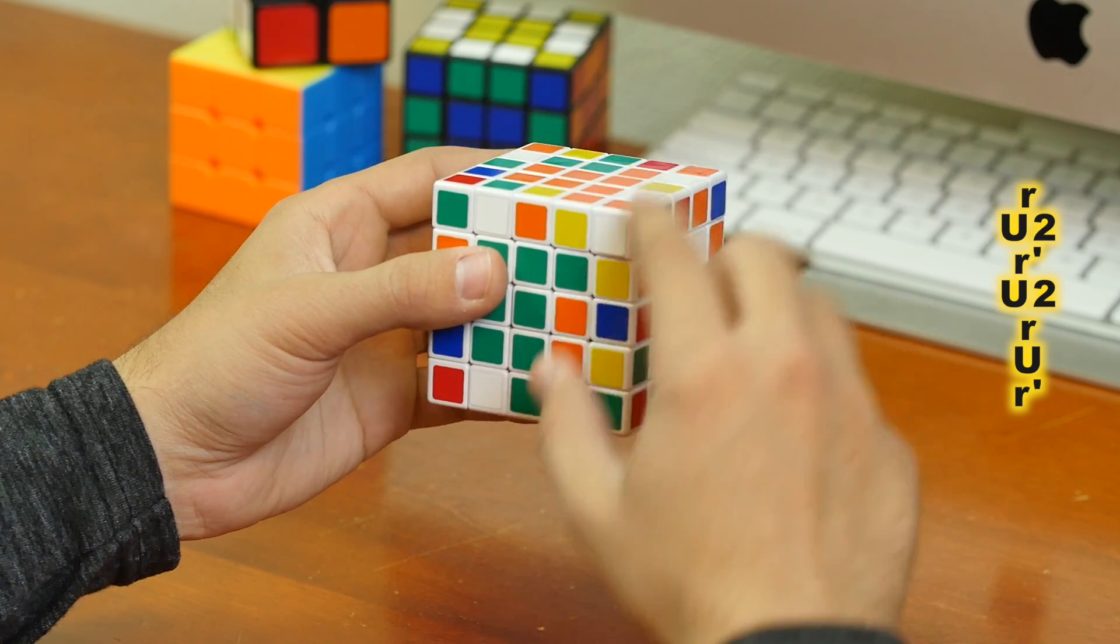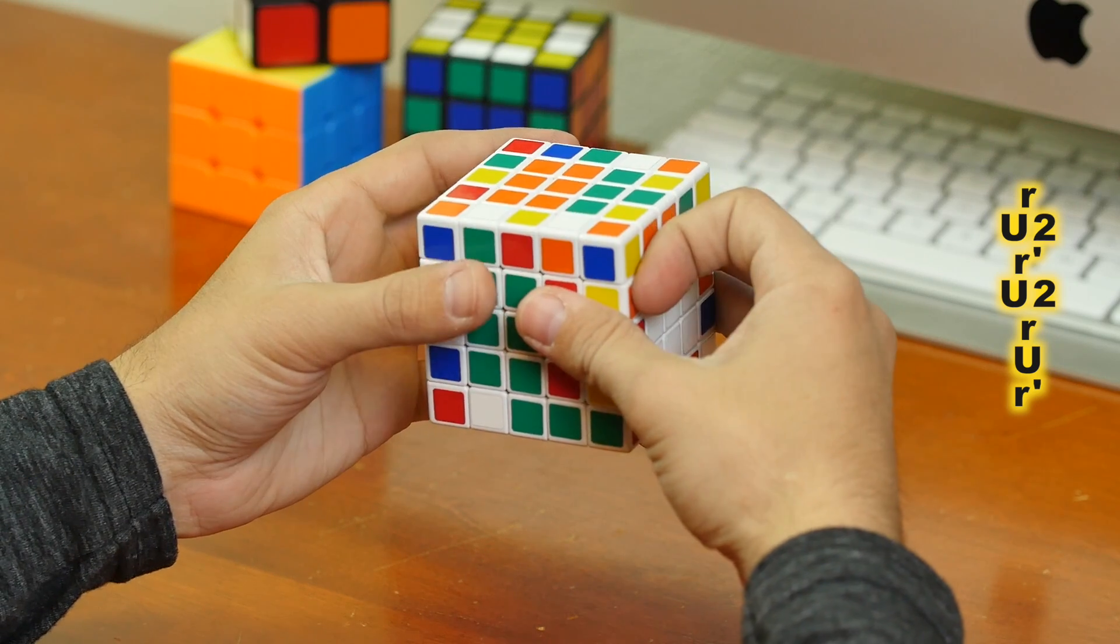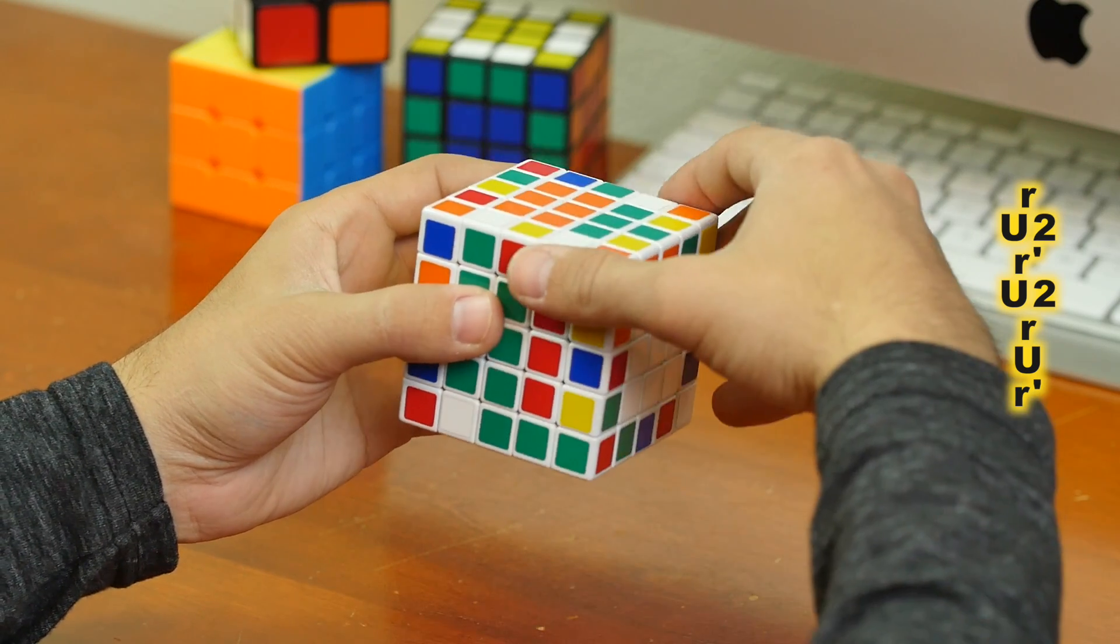Lower R, this right layer, right, clockwise. Up, and then lower R, right prime.